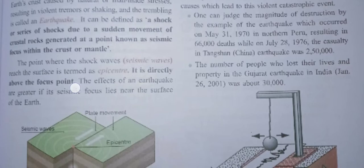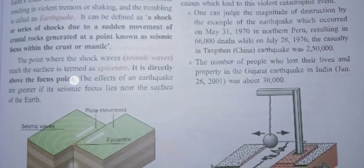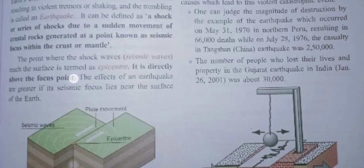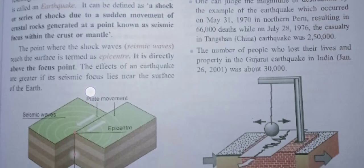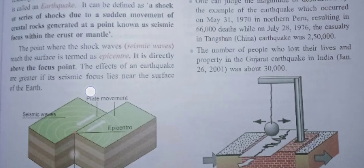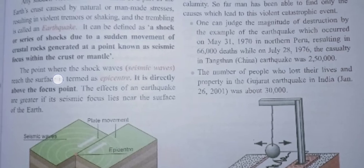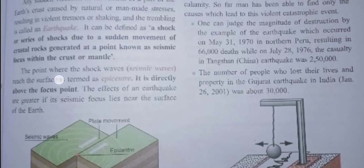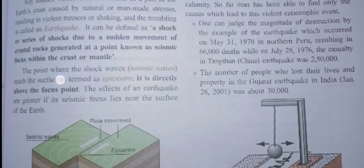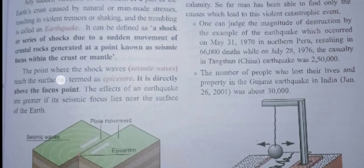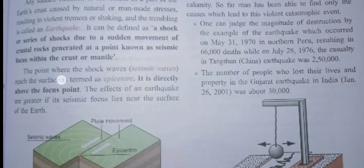One can judge the magnitude of destruction by these examples: the earthquake which occurred on May 31st, 1970, in northern Peru resulted in 66,000 deaths, while on July 28th, 1976, in Tangshan, China, the death toll was 250,000 people. These figures show how devastating earthquakes can be for mankind.